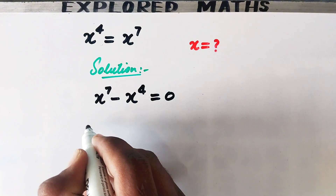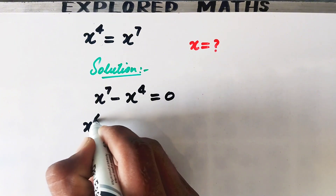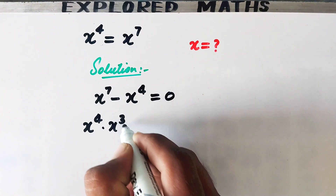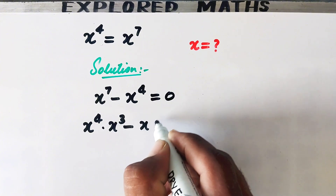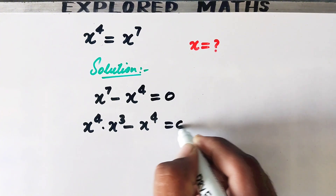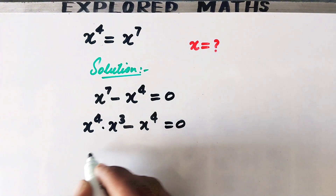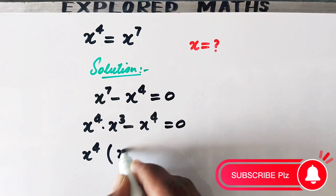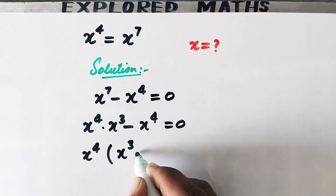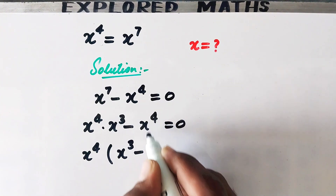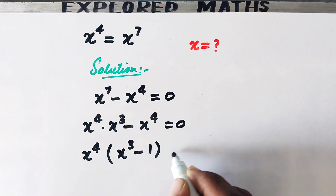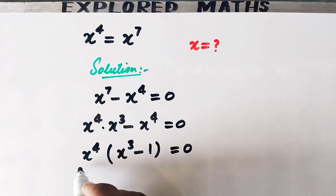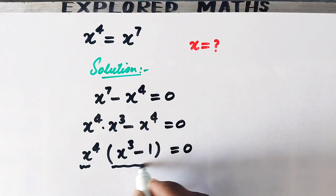We can write x to the power 7 as x to the power 4 times x cubed, so the expression becomes x to the power 4 times x cubed minus x to the power 4 equal to 0. Taking x to the power 4 as common, the left side becomes x to the power 4 times (x cubed minus 1) equal to 0.